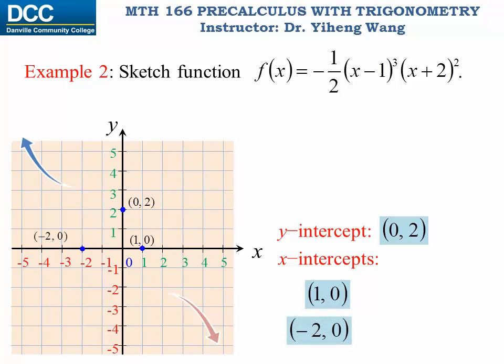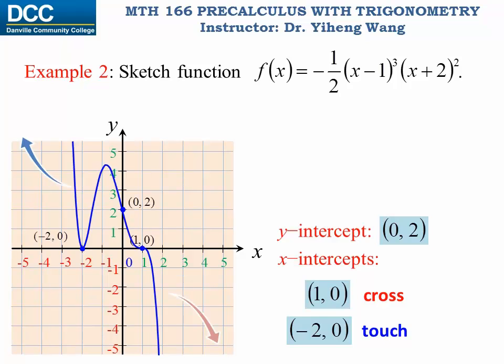x = 1 is a zero repeated 3 times — an odd multiplicity — so the graph crosses the x-axis there. x = -2 is a zero repeated twice — an even multiplicity — so the graph only touches the x-axis at that intercept but does not cross it. Based on all this information, here is the graph.